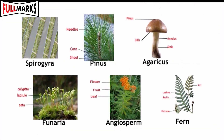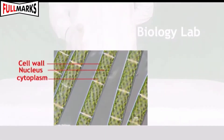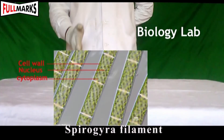Procedure: Observe the given specimen carefully, draw a diagram of each specimen, label it, and write two to four identifying features of the group they belong to.